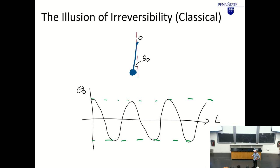If instead of having one harmonic oscillator we have three, what happens is that there will be some recursion after some time. It looked like we will have some arrow of time, but at some point we have again the same state and we cannot distinguish the past from the present.